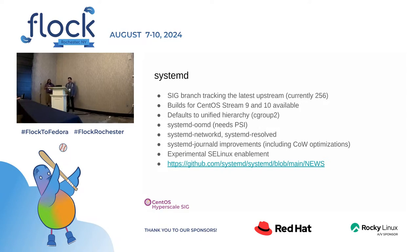We also ship the systemd networking daemons — systemd-networkd and systemd-resolved. At Meta we use networkd to run networking instead of NetworkManager, which is where the interest comes from. It won't be enabled by default on stock Stream unless you turn it on, but it works very well. We also ship journal improvements that came upstream, mostly around COW optimization — there's a lot of work in systemd upstream on making the journal more efficient, and it's nice to have all this work available downstream.